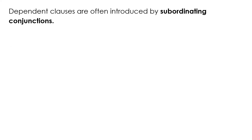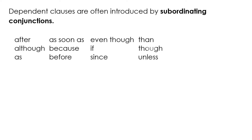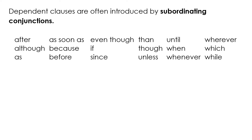Dependent clauses are often introduced by subordinating conjunctions. Let's look at some of those: after, although, as, as soon as, because, before, even though, if, since, then, though, unless, until, when, whenever, wherever, which, and while.